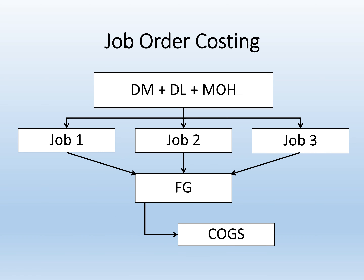Remember that firms choose their costing system based on how they understand their manufacturing operations. A firm chooses job order costing if it thinks of its work as discrete jobs that are not directly related to each other.